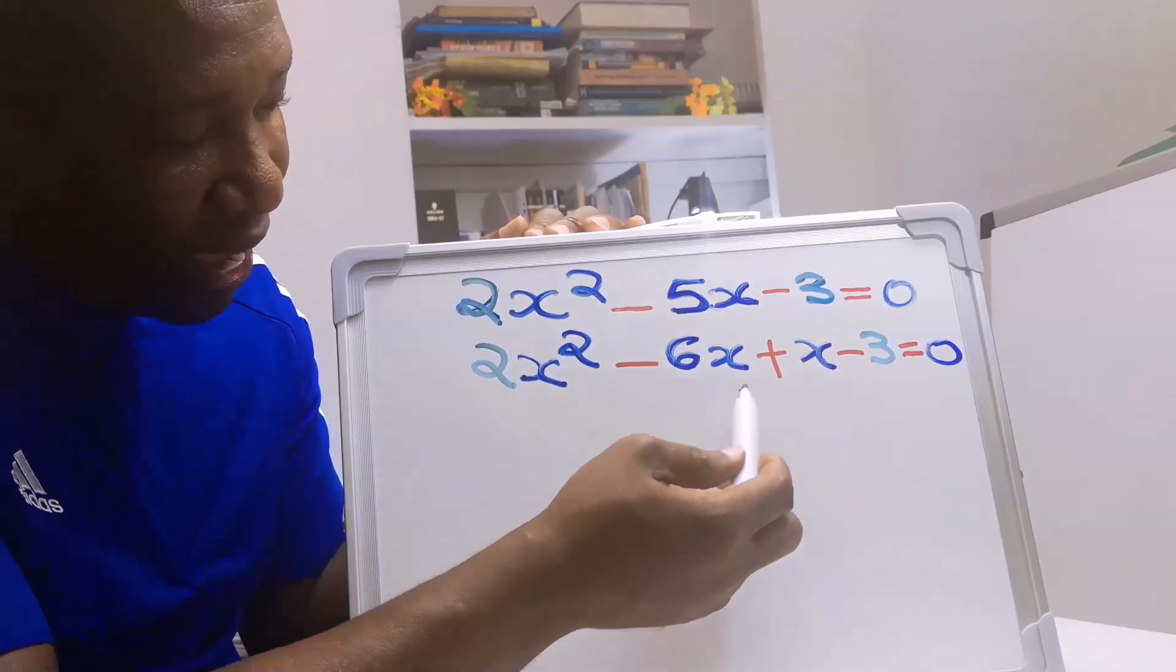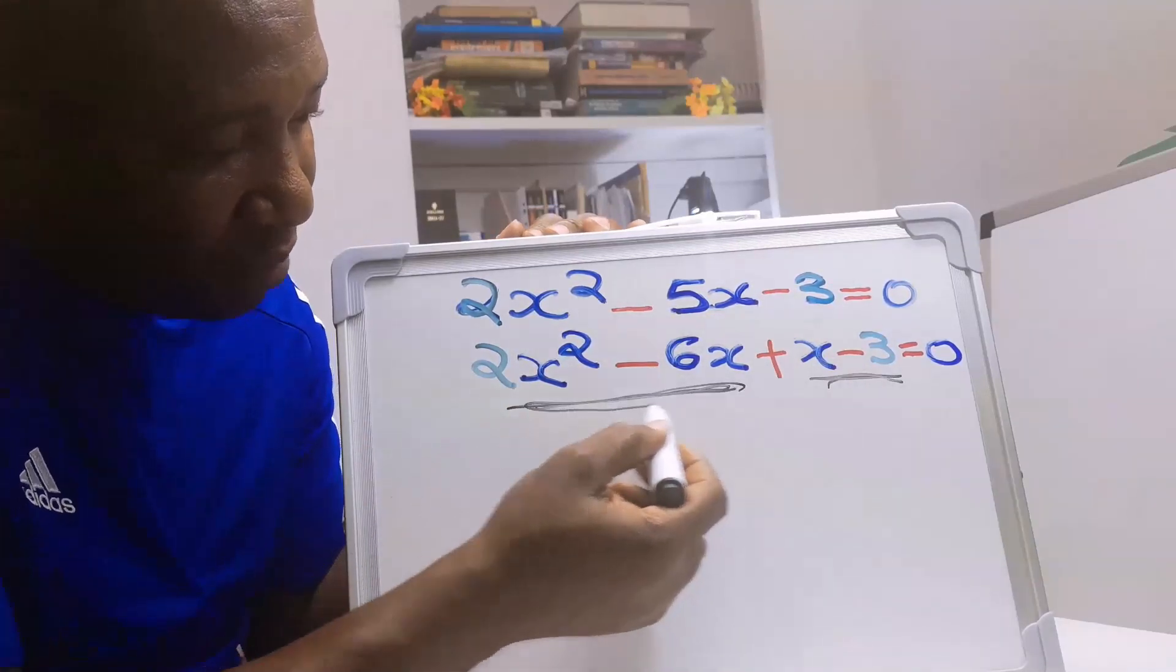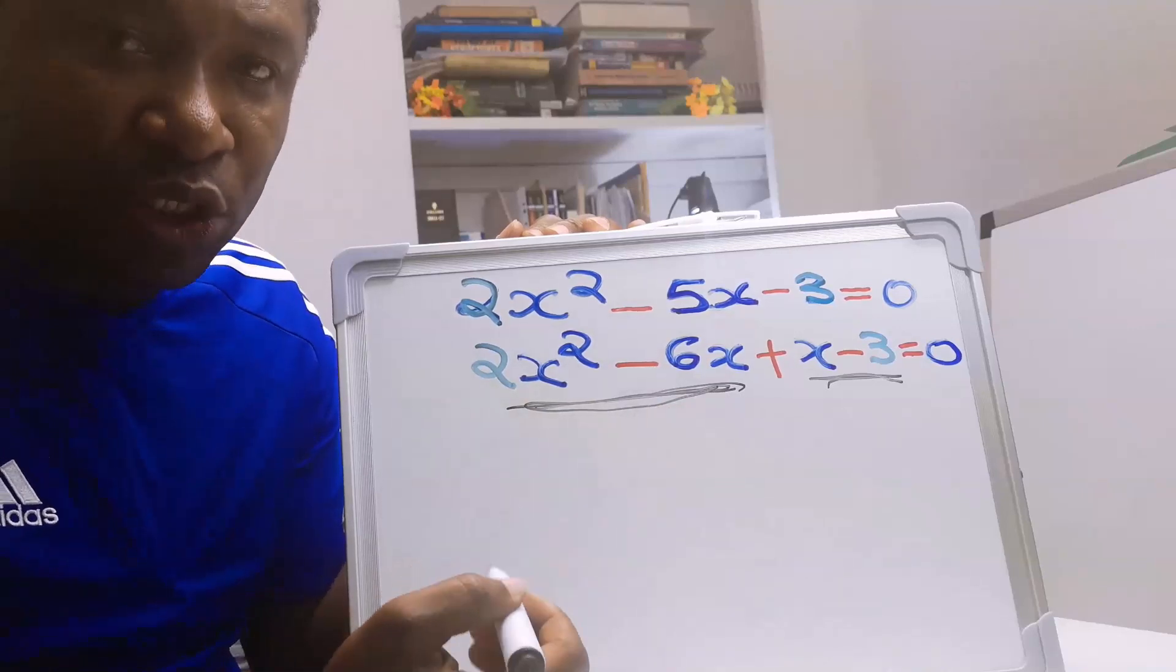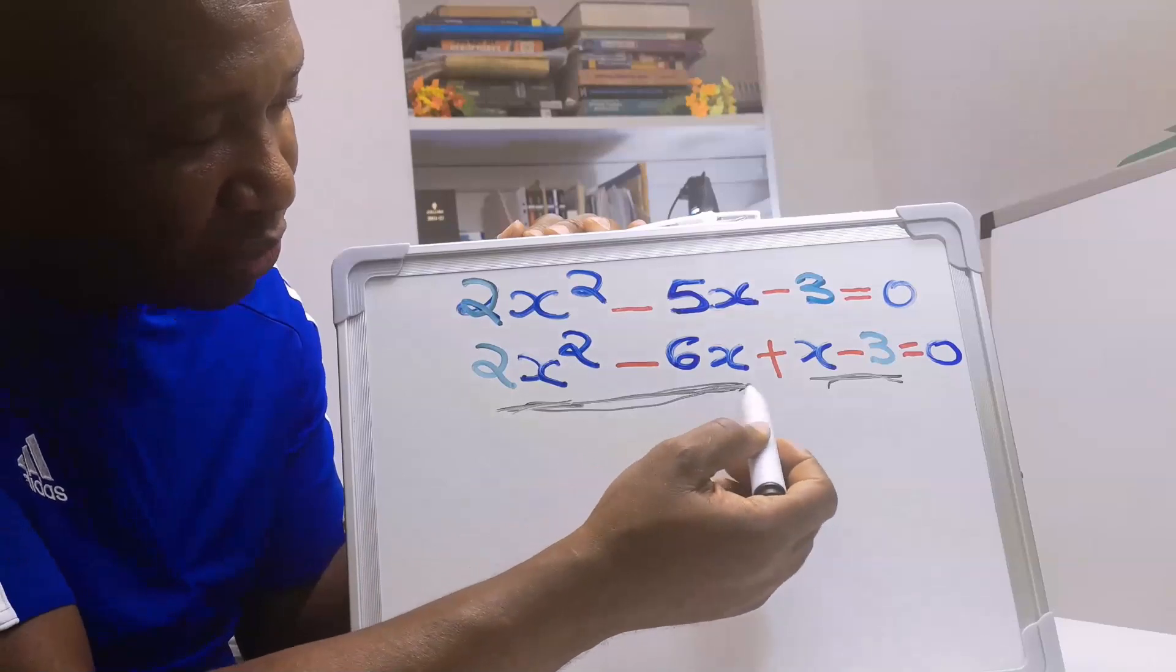Next, we are going to pair this term and the other term. Next, in the first two terms, we are going to consider what is common. What is common to 2x squared and to 6x? It is 2x.